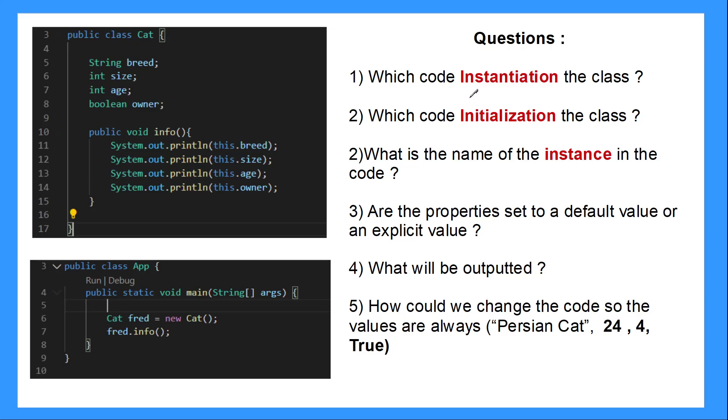So hopefully you've stopped the video and you've answered the questions. Let's go through them. So instantiation, this is when we create the instance of the class. This is when we create the object. So instantiation would be this code here when we are creating that object of that class. Initialization, this is when we're building the class. So this would be initializing the class.